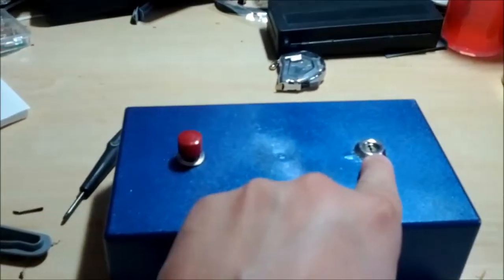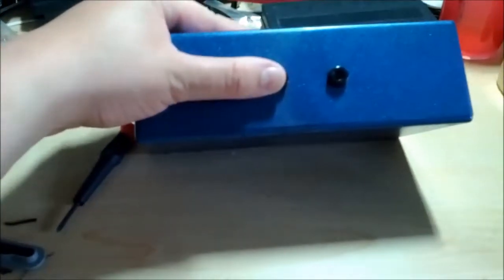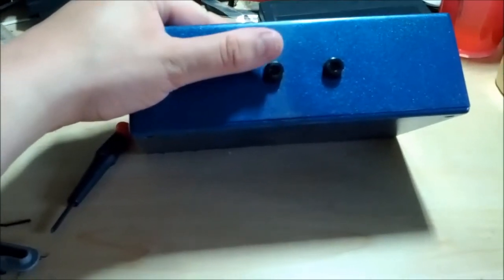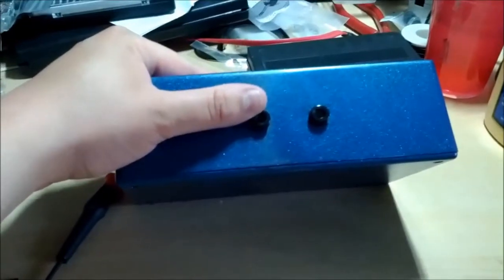It's got one switch, one key switch, and then I've got two banana jacks coming out here. This is where I plug in the wires that actually go out to the igniter in the rocket to launch it.